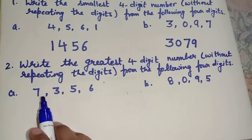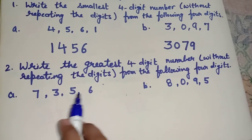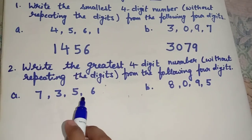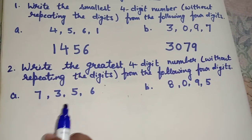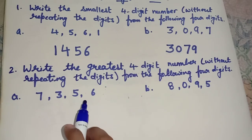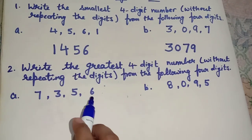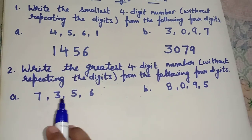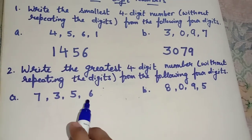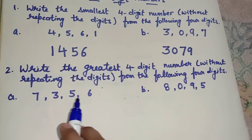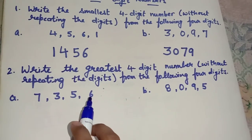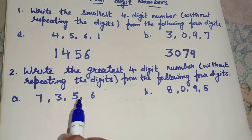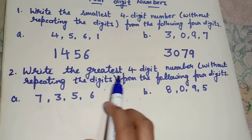So students, we have been given 4 digits separately: 7, 3, 5, 6. We have to make the greatest 4-digit number. So how do we make a greatest 4-digit number? We will arrange these digits in descending order. Descending order means greatest to smallest, because we are forming the greatest 4-digit number.